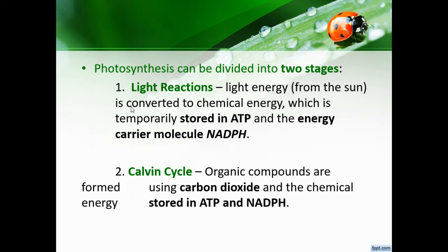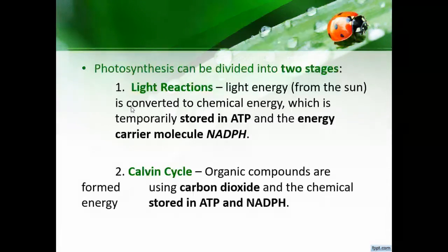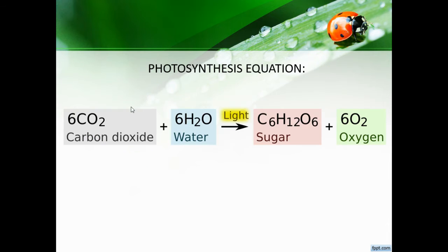Photosynthesis can be divided into two stages. The first is the light reactions, where light energy from the sun is converted into chemical energy, temporarily stored in ATP and the energy carrier molecule NADPH. Step two is the Calvin cycle, where organic compounds are formed using carbon dioxide and the chemical energy stored in ATP and NADPH.